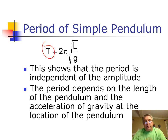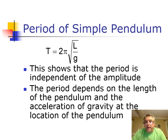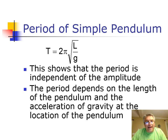A couple of things to note about this formula — note what's not in it. The period is independent of the amplitude, meaning how far the pendulum swings doesn't matter. And the mass of the weight at the end of the pendulum is also not included, so the period is independent of how heavy the object you put at the end of the pendulum.